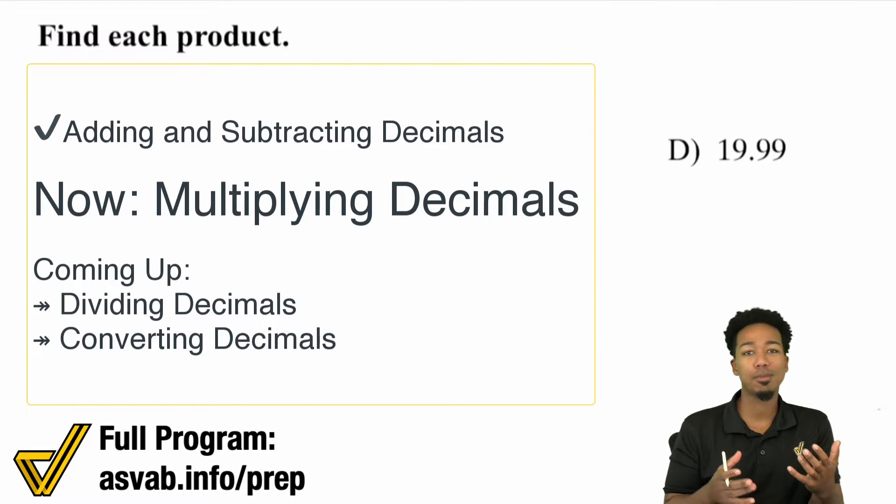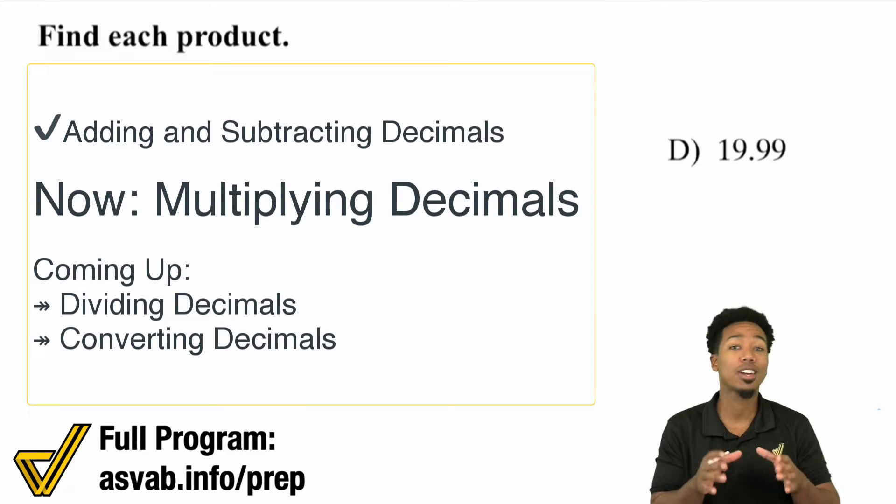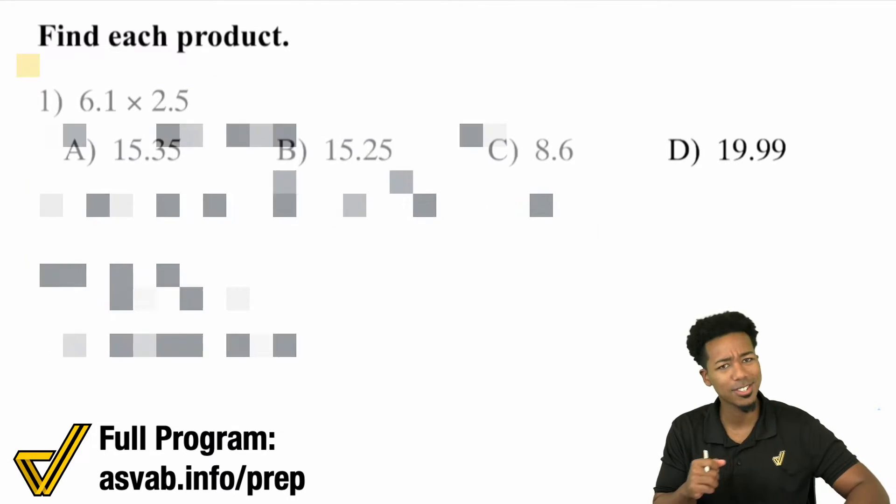When it comes to multiplying decimals, very straightforward rule here. All you got to make sure you do is bring those decimals back after you're done multiplying and you're good. Let's take a look.